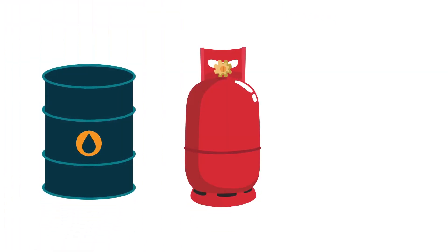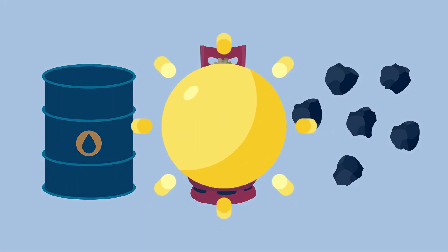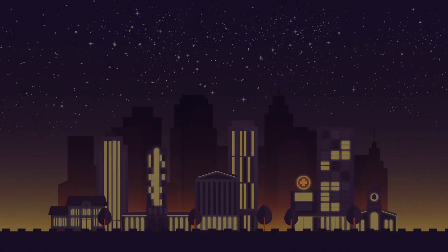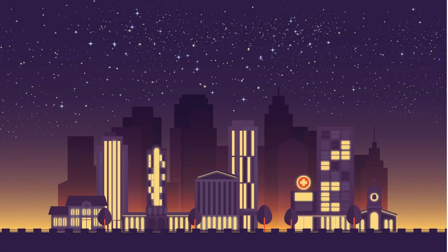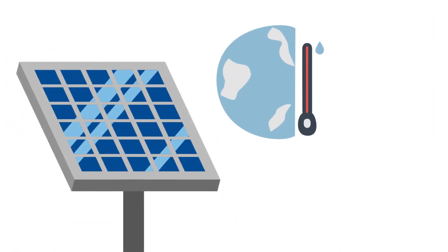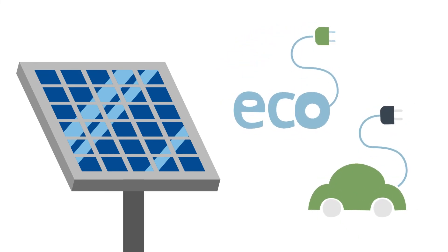Unlike oil, gas or coal, the sun is a limitless supply of free, natural energy. So for businesses, and in particular those that use large amounts of grid-supplied electricity, solar PV offers an economical solution to reducing the overhead of energy costs, as well as the benefits the operation has on the environment.